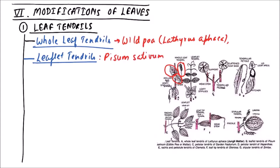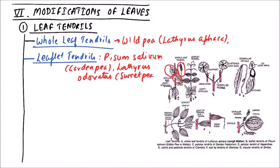The second category is leaflet tendrils. Leaflet tendrils include Pisum sativum, also known as garden pea, and also Lathyrus odoratus, which is known as sweet pea, both involved in the formation of leaflet tendrils.